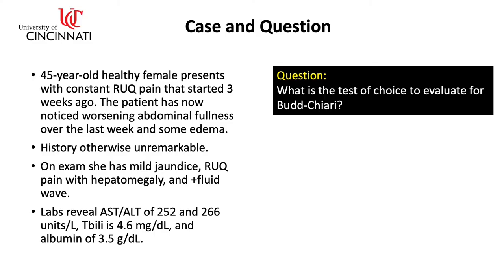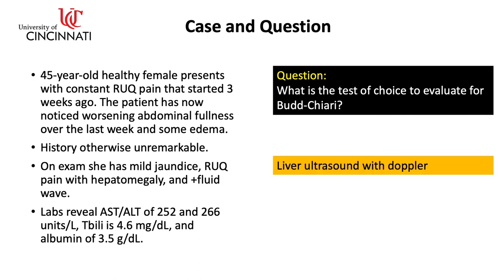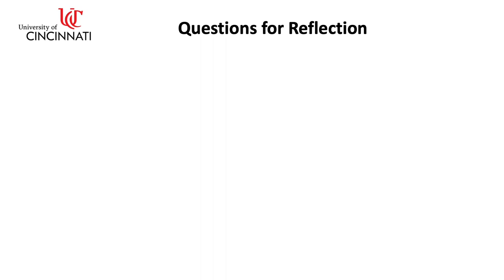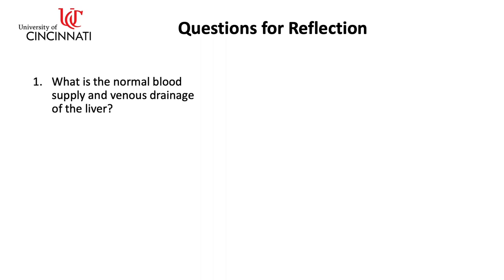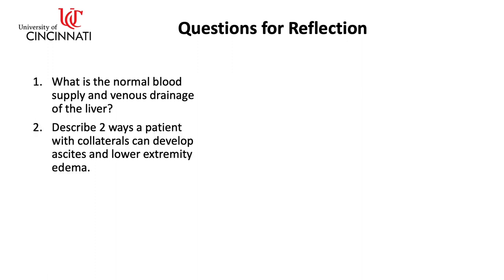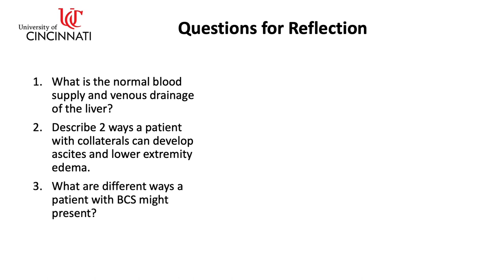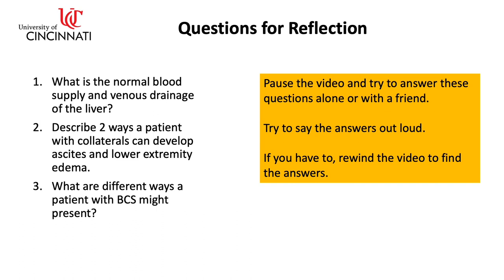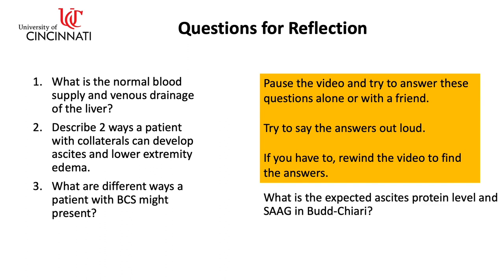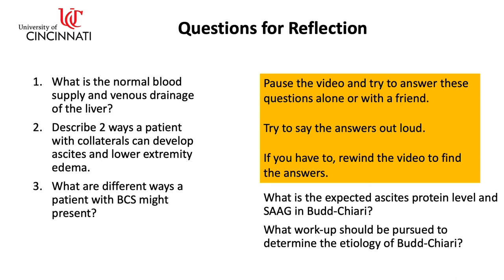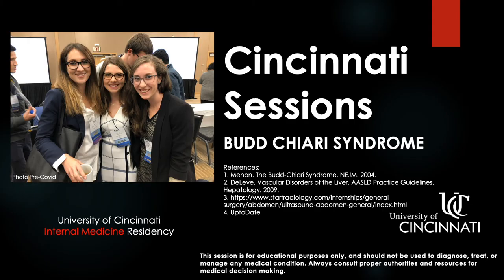For our case, the test of choice to evaluate for Budd-Chiari is ultrasound with Doppler. Questions for reflection: What is the normal blood supply and venous drainage of the liver? Describe two ways a patient with collaterals can develop ascites and lower extremity edema. What are different ways a patient with Budd-Chiari syndrome might present? Additional questions: What is the expected ascites protein level and SAAG in Budd-Chiari? What workup should be pursued to determine the etiology? Thanks for tuning in to Cincinnati Sessions.